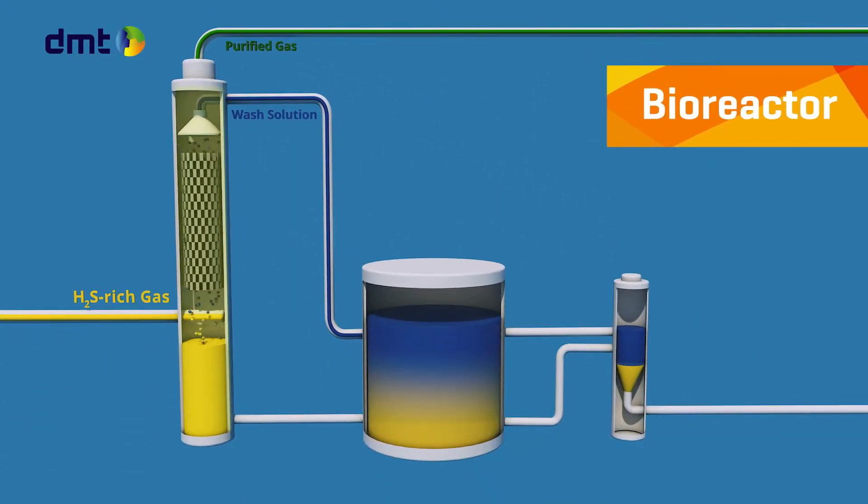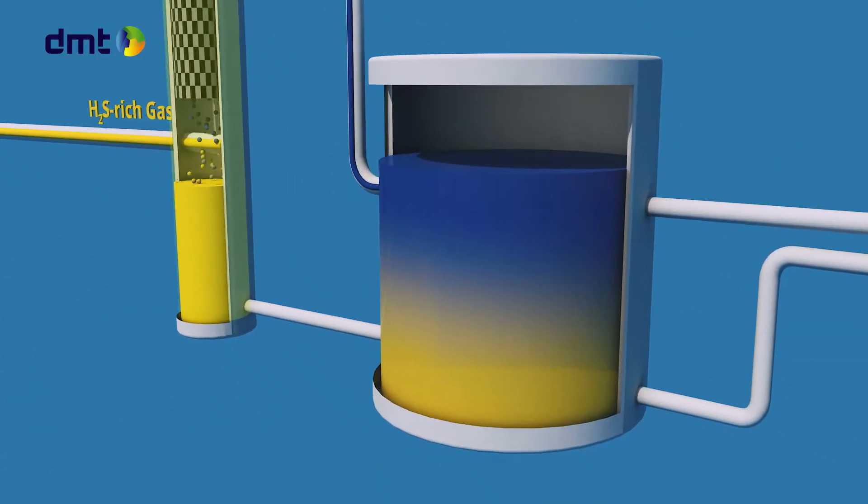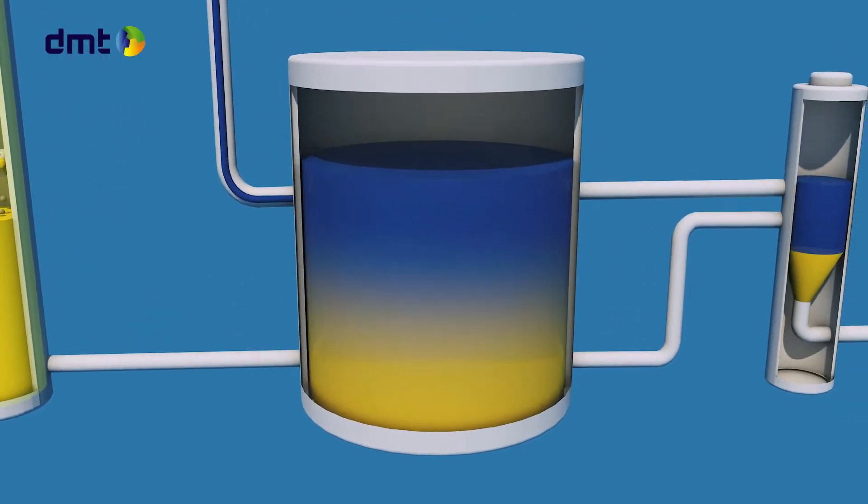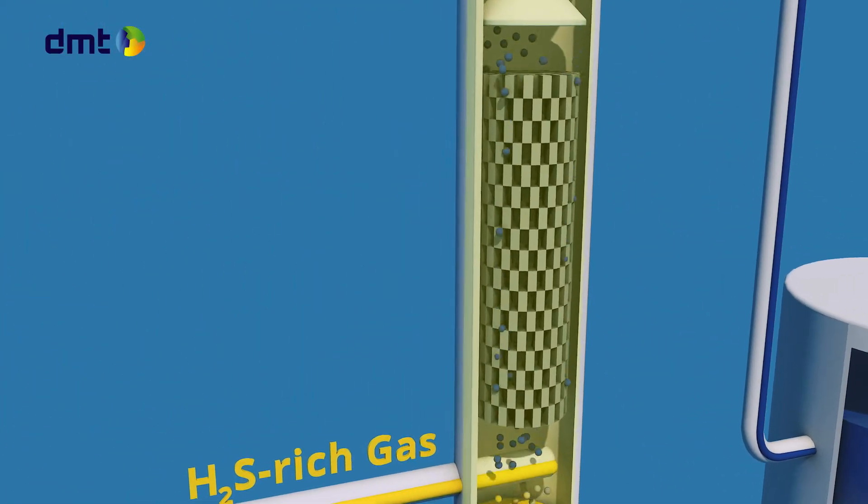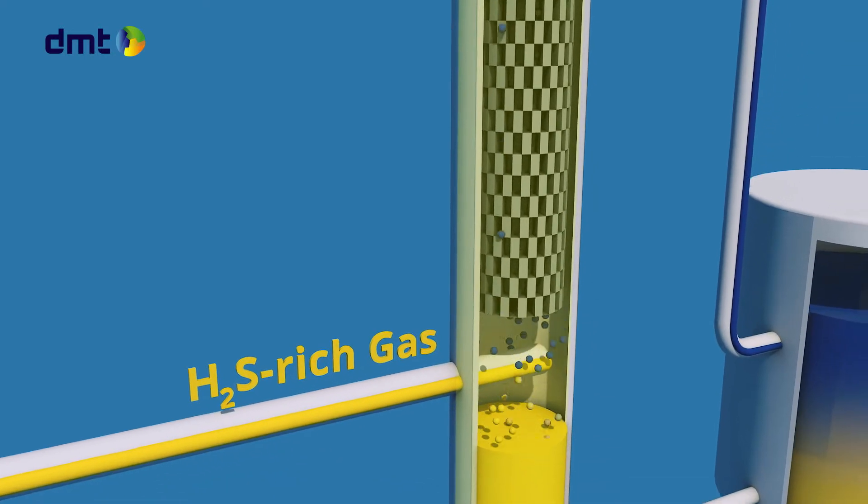The bioreactor section: the wash solution used in the system is an alkaline solution. Due to a physical chemical reaction in the absorber, the H2S is dissolved as a sulfide molecule.